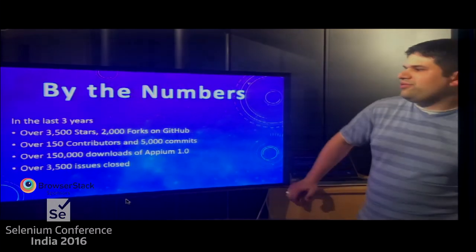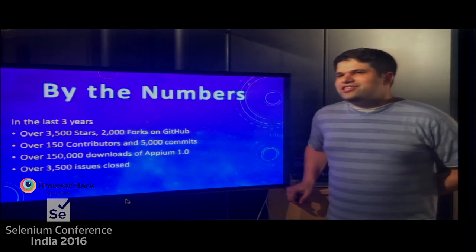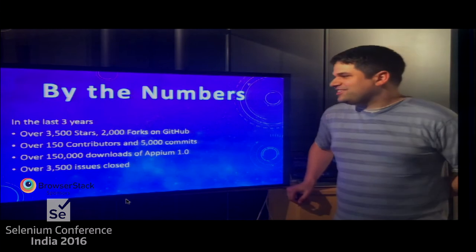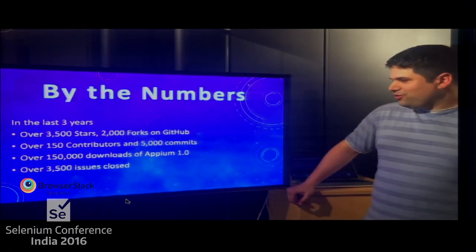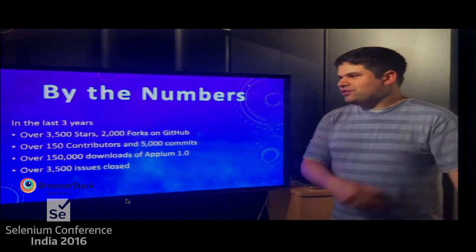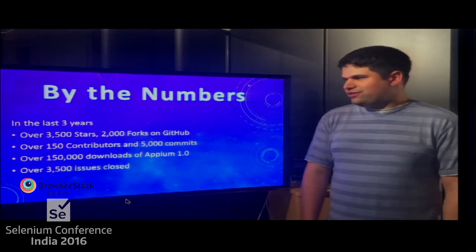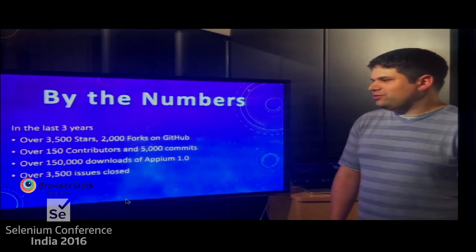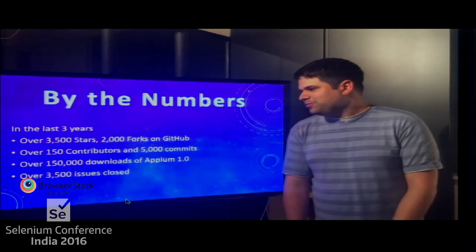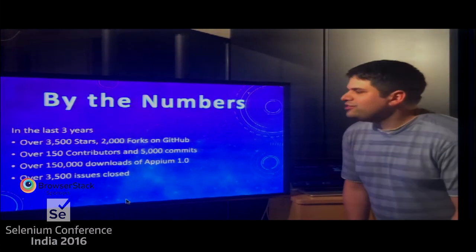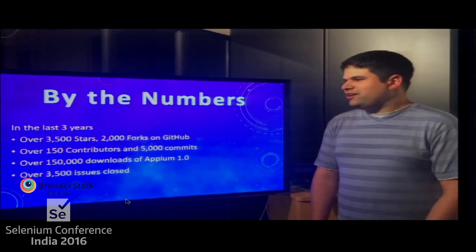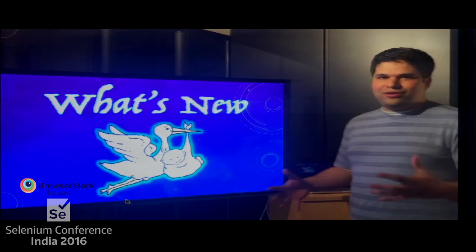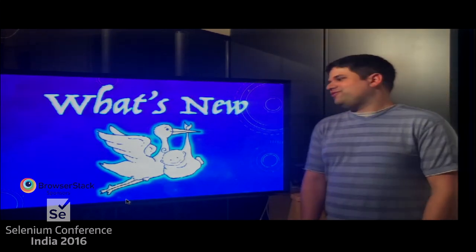By the numbers, we have 3,500 stars on GitHub — I think last time I checked that was more than Selenium. We have 2,000 forks, over 150 people have submitted a patch, and our V1 had over 150,000 downloads. Version 1.5 has had many more than that. We've also closed 3,500 issues, which is a two-edged sword — we fixed a lot, but there were a lot of issues.